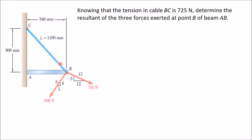This example is taken from the book Statics and Dynamics by Beer and Johnson. In this problem there are three forces acting at one point: two external forces of 780 Newton and 500 Newton, and one tension in cable BC of 725 Newton. We will determine the resultant of these three forces using the resolution of forces method.